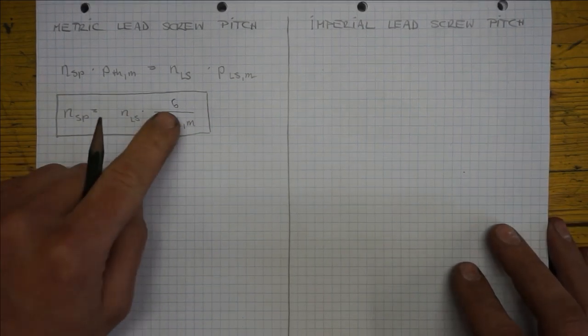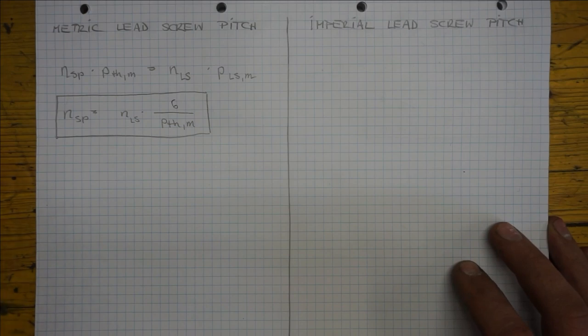Let me rearrange it so it is more simple to use. And for this I will divide by PTH to bring it to the right. Now let us call this equation the threading condition. I've put a 6 here instead of PLS because a typical metric lead screw pitch is 6 mm.